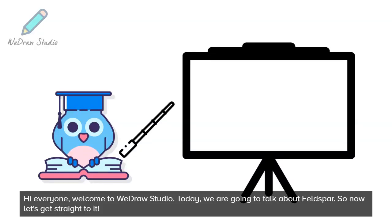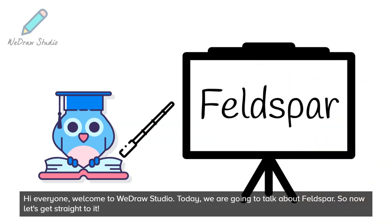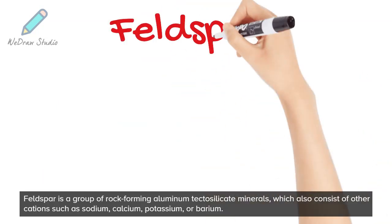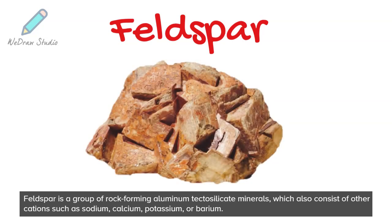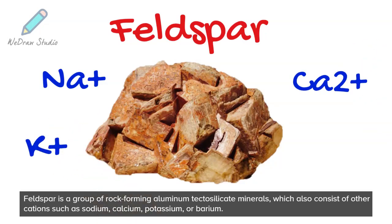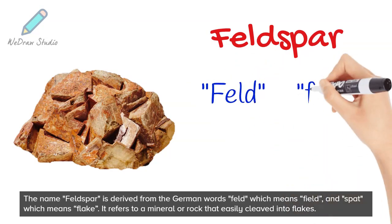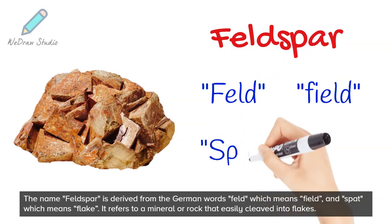Hi everyone, welcome to WeDrawStudio. Today we are going to talk about feldspar, so let's get straight to it. Feldspar is a group of rock-forming aluminum tectosilicate minerals which also consist of other cations such as sodium, calcium, potassium, or barium. The name feldspar is derived from the German word 'feld,' which means field, and 'spat,' which means flake.